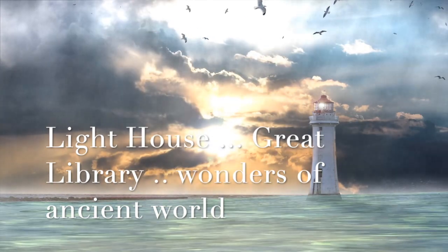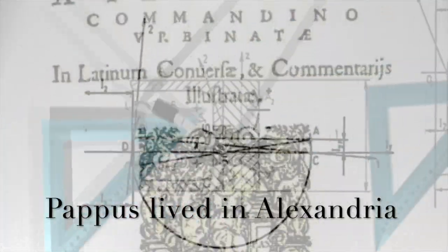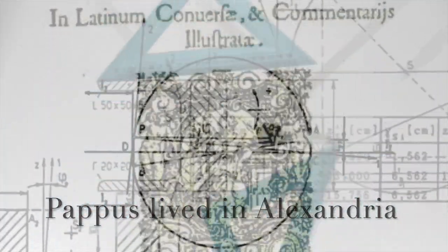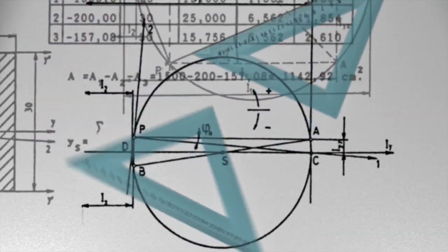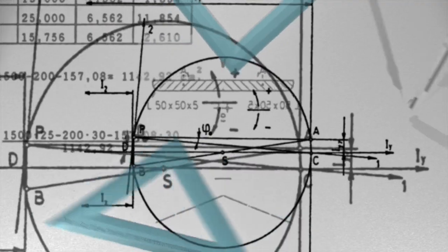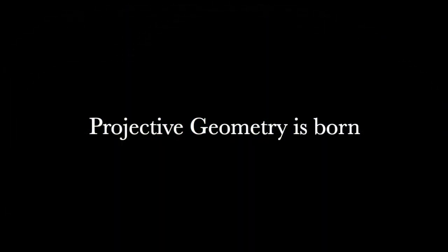Perhaps a much less known wonder was Pappus the geometer. Pappus lived in Alexandria about 600 years after the city was founded along the coast of Mediterranean Sea and with him was born one of the wonders of modern mathematics, the projective geometry.